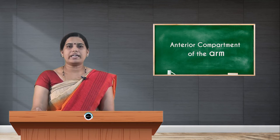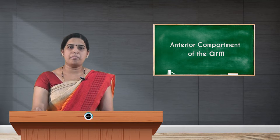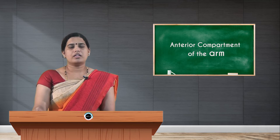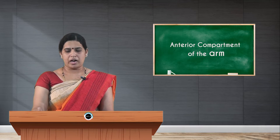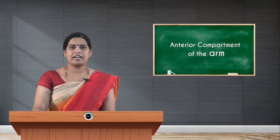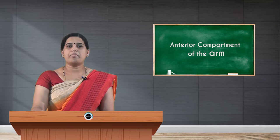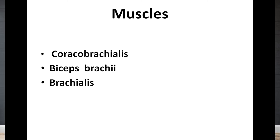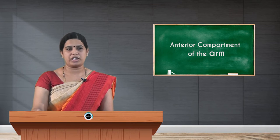When it comes to any compartment, there will be particular muscles, vessels, and a nerve of that compartment. The muscles of the anterior or flexor compartment of the arm will be discussed first, then the artery along with accompanying veins, and then the nerve of the compartment. There are three important muscles in the anterior compartment: coracobrachialis, biceps brachii, and brachialis. We will cover origin, insertion, nerve supply, and actions of each.